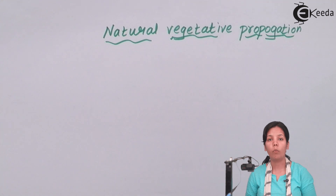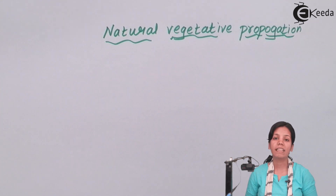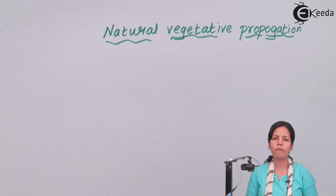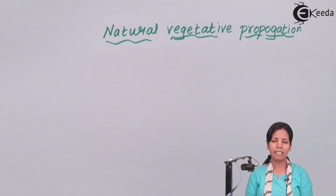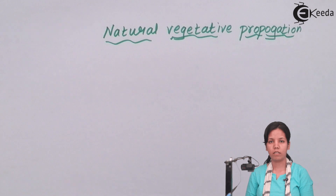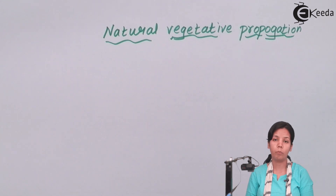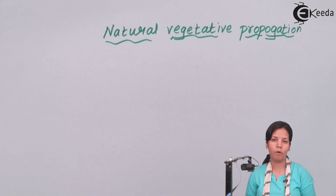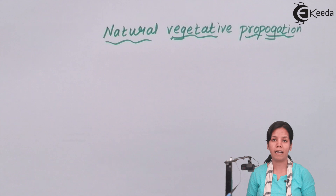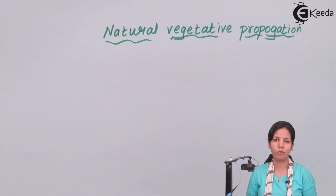Potato grows underground — it is a stem modification, whereas sweet potato is a root modification. The stem of a potato has modified itself to store glucose, or you can say a food source for itself. The next type of modification is the leaves of bryophyllum. On the leaves of bryophyllum, adventitious buds grow, and these adventitious buds can be used to plant another plant. Both sweet potato and potato have modified for food storage so that they can sustain themselves in unfavorable climatic conditions.